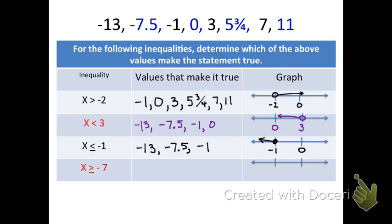The last inequality says x is greater than or equal to negative 7. The values greater than or equal to negative 7 include negative 1, 0, 3, 5 and 3 fourths, 7, and 11. When graphing, use 0 and negative 7. Since it's greater than or equal to, use a closed circle, and the arrow heads to the right. That is how you determine solutions and graph linear inequalities.